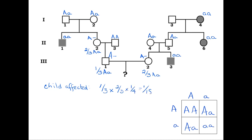This is the probability that the husband is a carrier times the probability that the expectant mother is a carrier times the probability that their child will be affected if both parents are heterozygotes.